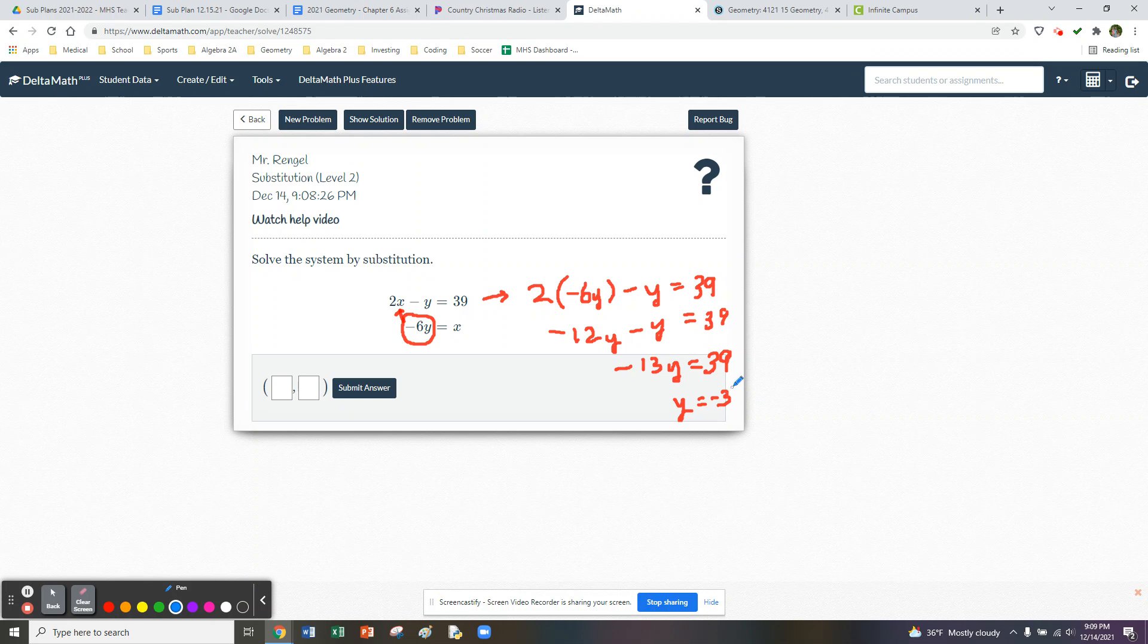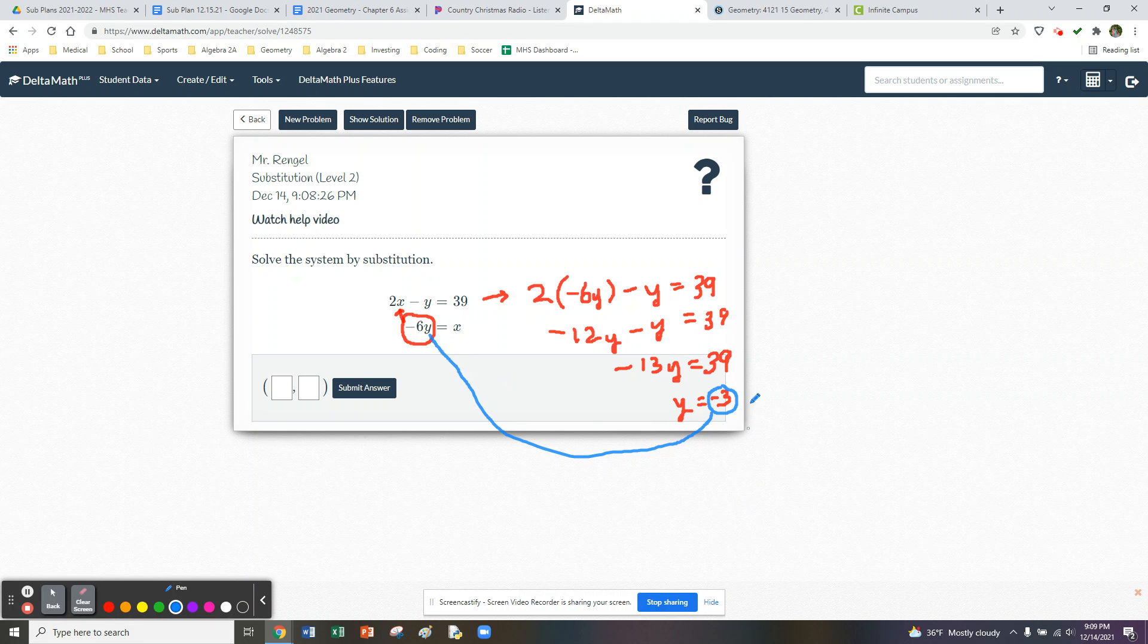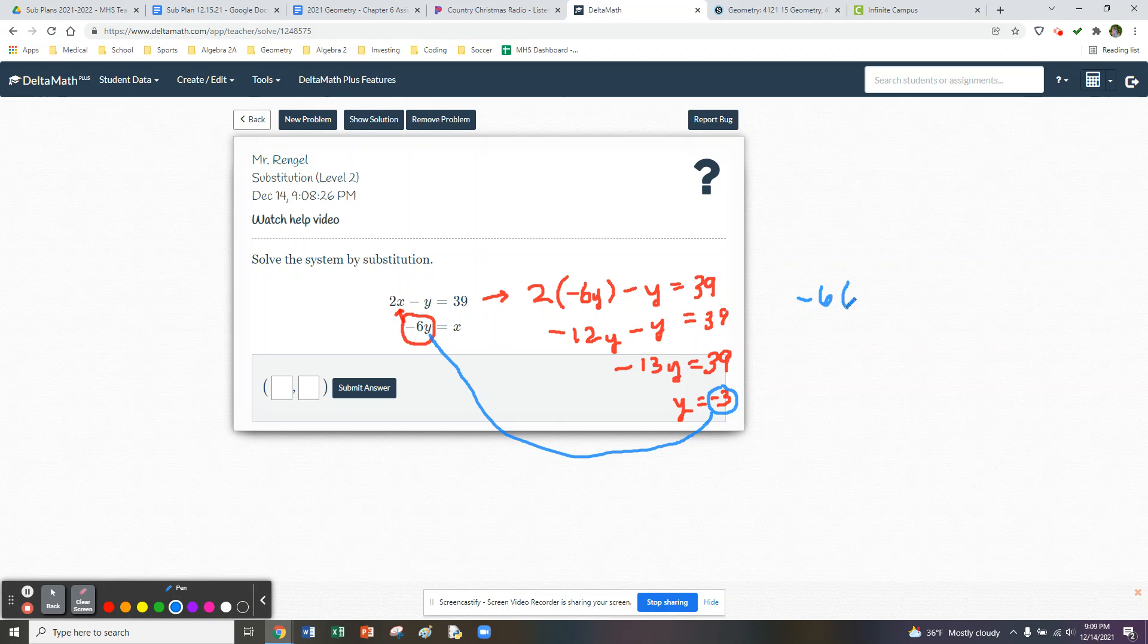Now once we know y is negative 3, it's just kind of a chain reaction. We can replace that back into the equation and start to solve for x. So we'll go negative 6 times negative 3 equals x, which simply multiplying those two numbers, we'll get 18 is equal to x.